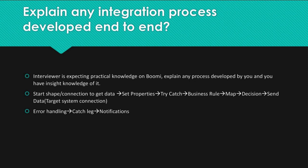A typical end-to-end process flow includes: Start shape or connection to get data, set properties, try/catch, business rule map, decision, send data, target system connection, error handling, and catch leg notifications.